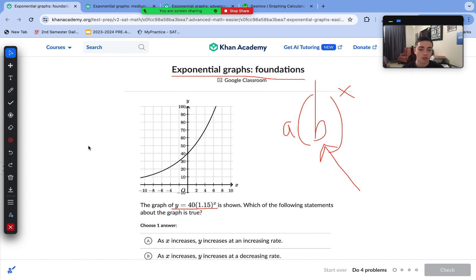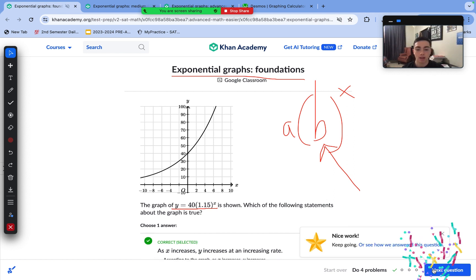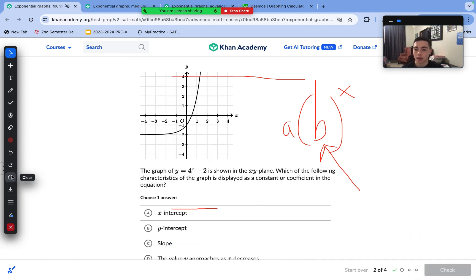With our exponential equation, since B equals 1.15, that means y is going to be increasing at an increasing rate, because exponential graphs get steeper over time, and choice A is correct here.